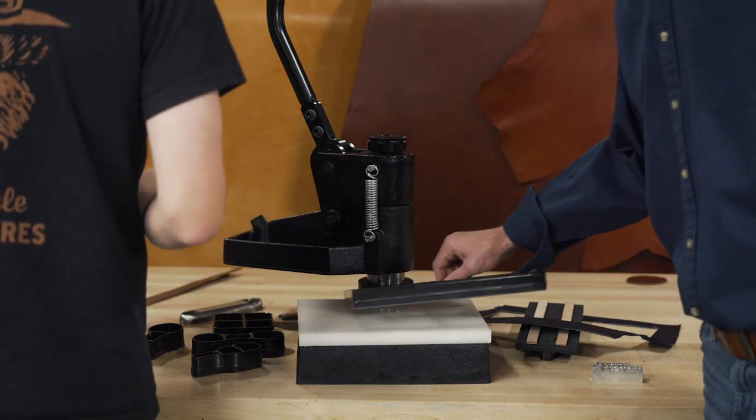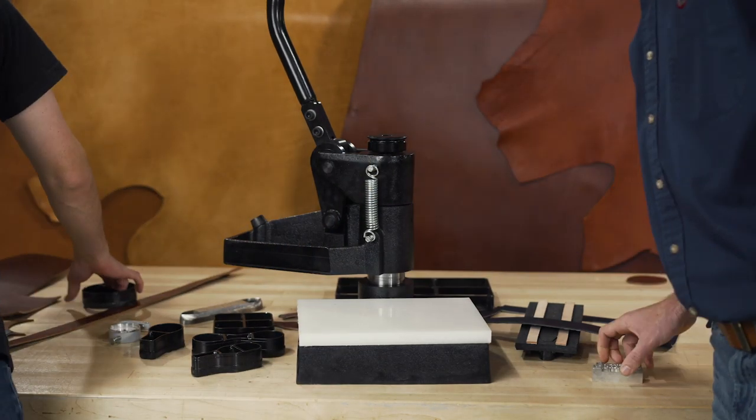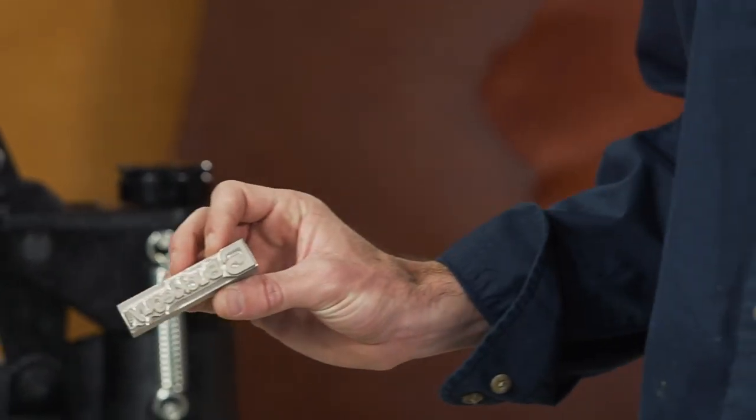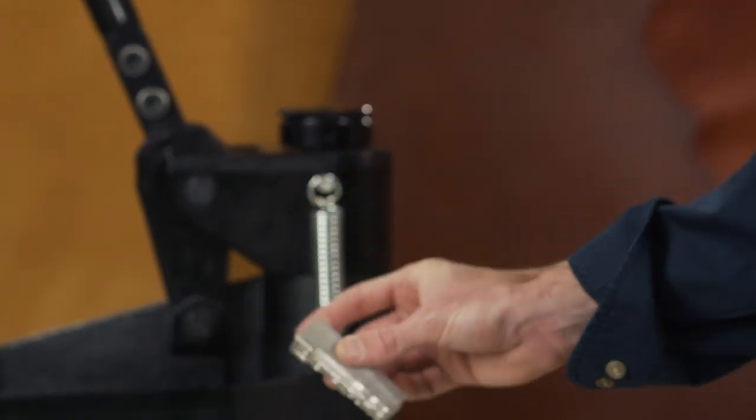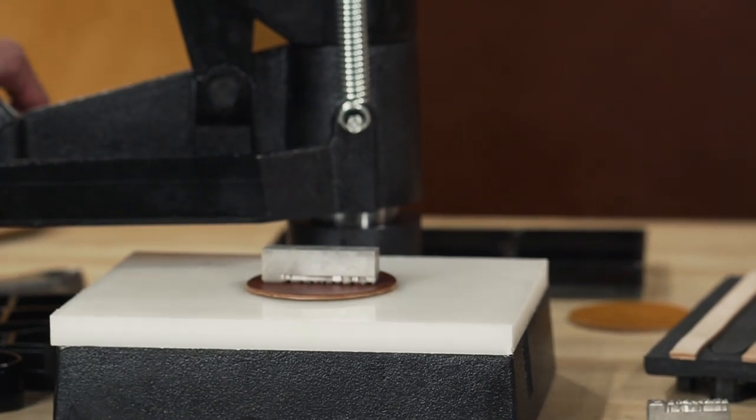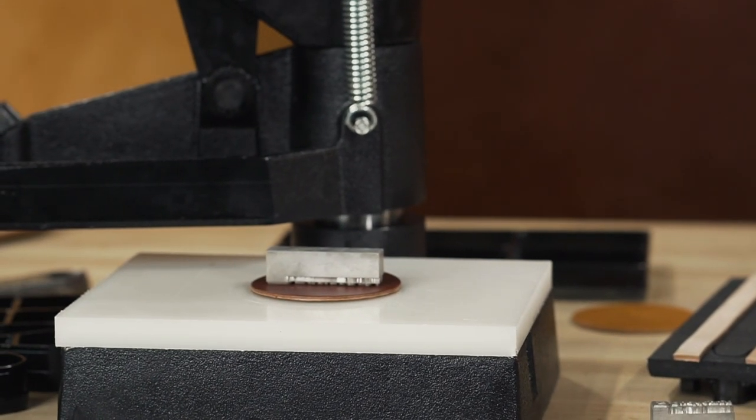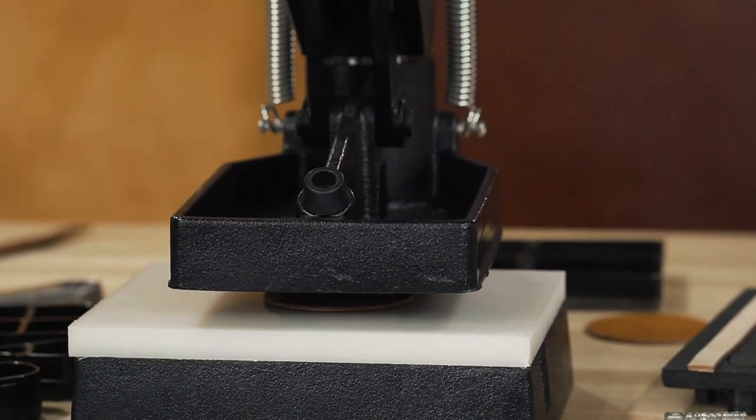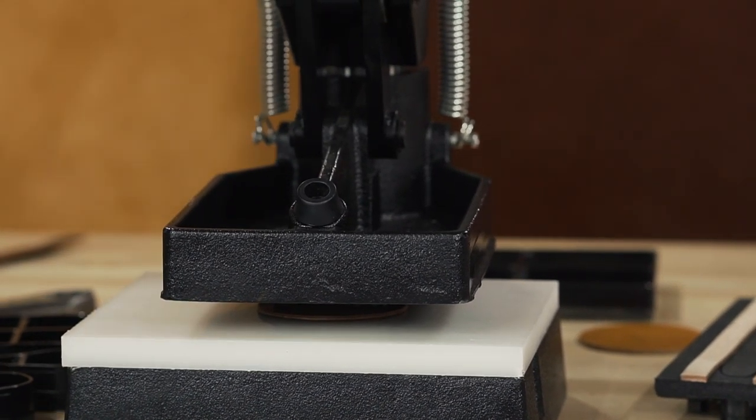One more thing we want to show you is the ability to use embossing dies. So we have a logo die—it's a one inch magnesium die. I'm going to put it right there. Just like clicking out with the die, we're going to swing the head over and make sure that when we come down, we're getting a little bit of pressure.